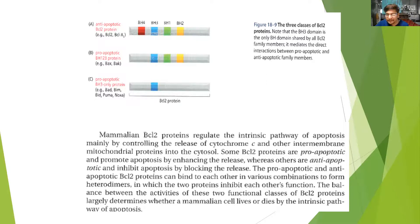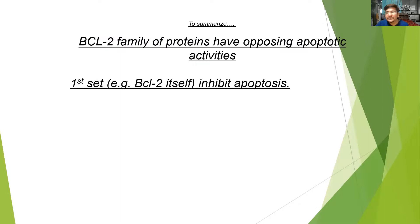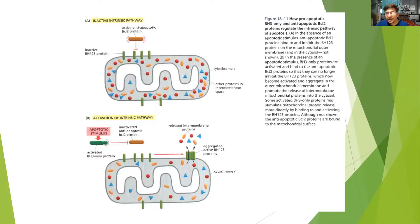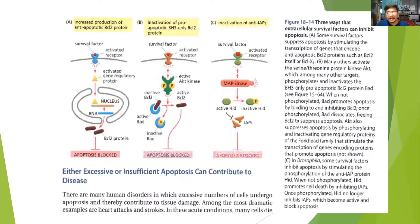The BCL-2 family: the first set inhibits apoptosis, the second set promotes apoptosis, and the third set — the BH3-only proteins — binds and regulates the anti-apoptotic BCL-2 protein to promote apoptosis. When BCL-2 is active, it does not allow the BH1-2-3 proteins to come together, hence preventing apoptosis. When an apoptotic stimulus comes, it regulates BCL-2, which leads to the formation of the BH1-2-3 family and eventually leads to activation of the apoptotic process.